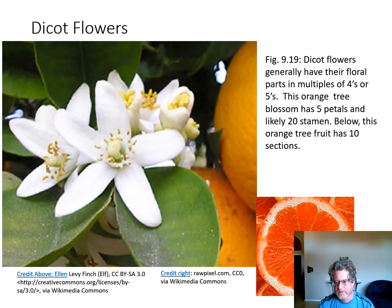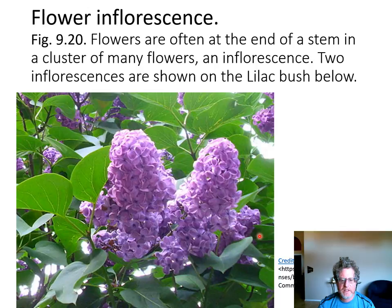Sometimes flowers are on a branched protrusion at the end called an inflorescence, where you have many flowers clustered together. Here's a lilac with its inflorescence — you get these clumps just full of flowers.